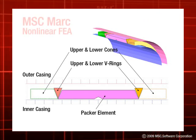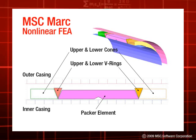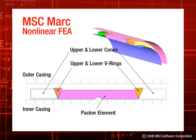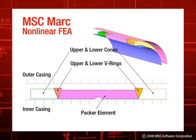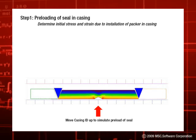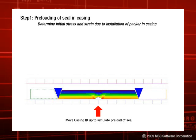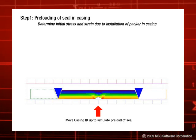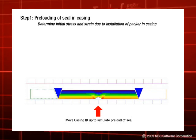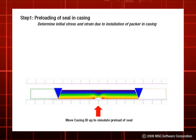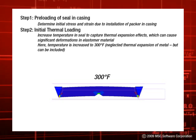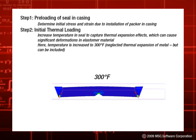The nonlinear FEA solution of MARC is used to simulate the packer deformation and analyze the system's stress and strain behavior. In order to keep the size smaller, an axisymmetric model of the design is used for analysis. The first step is to preload the seal as it is installed in the casing. In order to obtain the initial strain state of the seal without actually having to simulate the insertion step, the casing inner diameter is expanded to simulate the installation fit. The next step is to heat the packer to expected service temperature, enabling us to capture the thermal expansion effects which cause the seal to expand prior to setting.